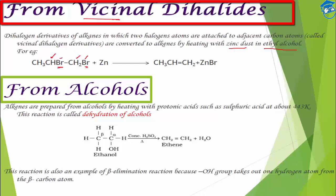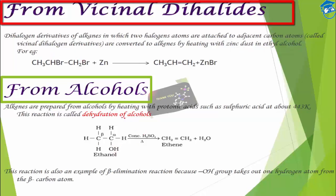Finally, from alcohol: when we heat an alcohol with a protic acid such as concentrated H₂SO₄ at an elevated temperature like 443 K, removal of hydrogen and hydroxyl takes place. The H is removed from the beta position, so it is a beta elimination reaction, and since H and OH are removed together as water, this is called dehydration of alcohol.